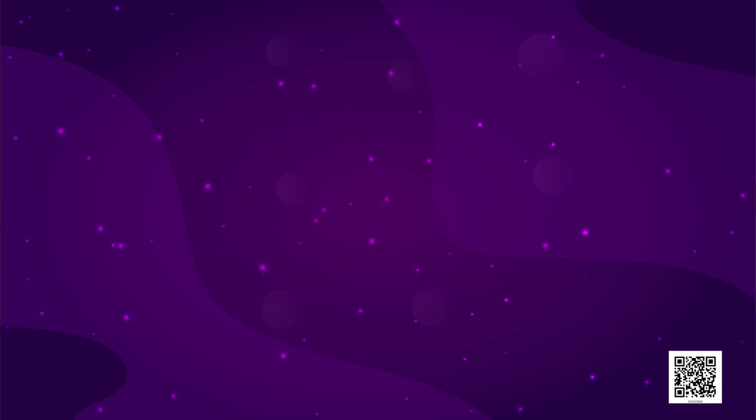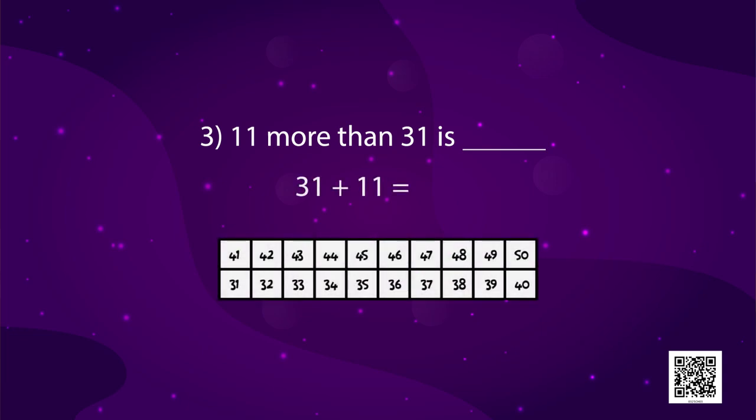Next, you tell me, what is 11 more than 31? Now, we first move one step upwards from 31 to 41. And then, one step towards the right. That is forward. And we reach 42. So, 11 more than 31 is 42.